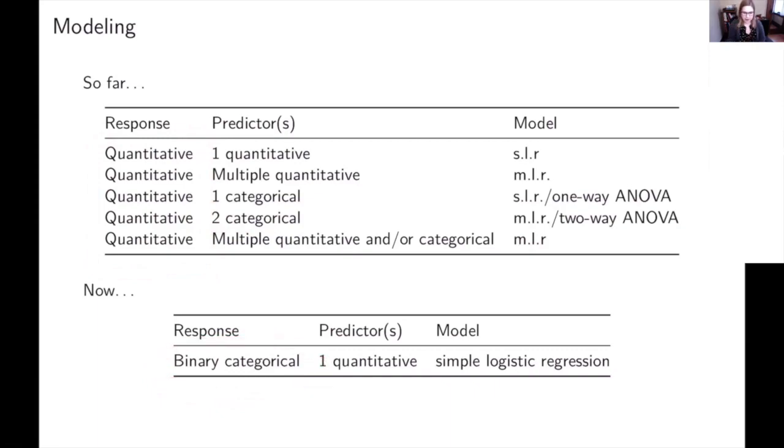It's going to be a binary categorical variable. Binary means it just has two possible choices, so it could be like a zero or one, or a yes or no.